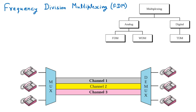Now we are discussing frequency division multiplexing. We already know that multiplexing means combining different signals together into one. Under multiplexing, in the analog technique, the first one is FDM. FDM stands for frequency division multiplexing. Since FDM comes under the analog technique, we can say that frequency division multiplexing is an analog technique.